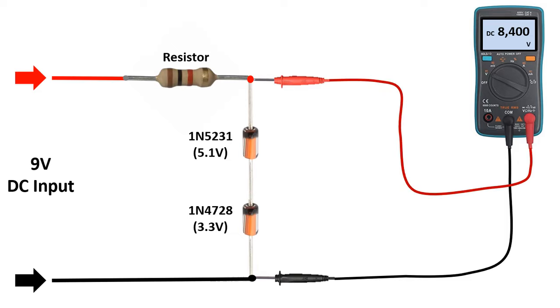If we measure the voltage across the two diodes, we see the total Zener voltage. In the same way, even if we make the source 12 volts, the voltage will still be constant 8.4 volts. Zener diode is used in this way to ensure that many circuit devices operate at a certain voltage.